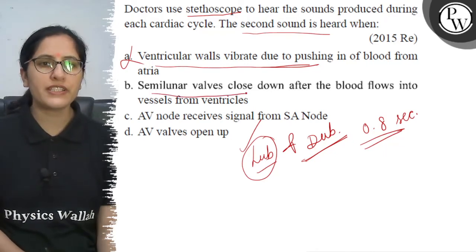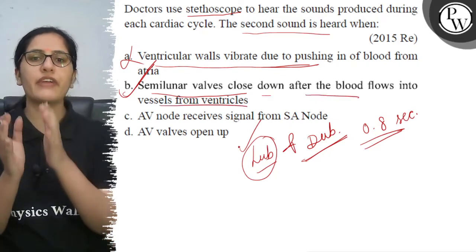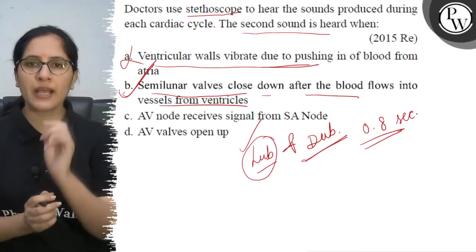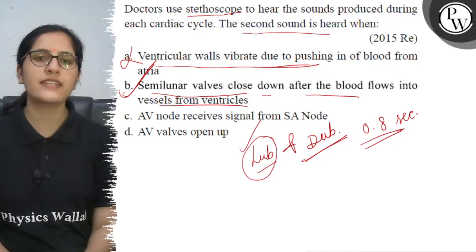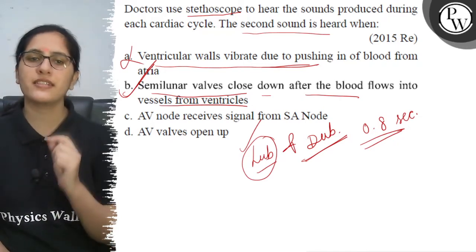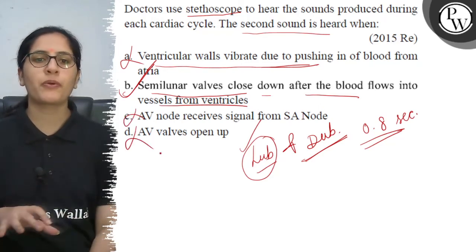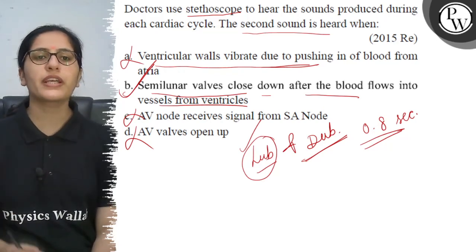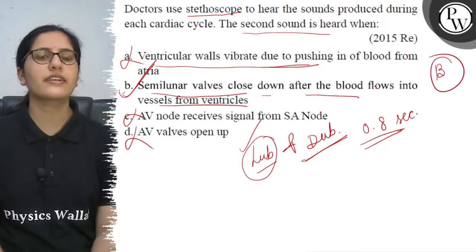Semilunar valves close down after the blood flows into the vessels from the ventricles. So here, only Option B is the correct answer.